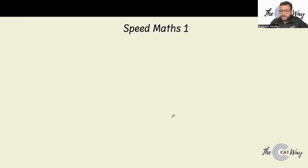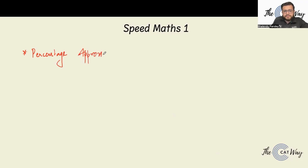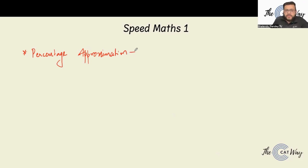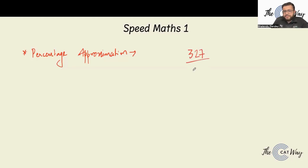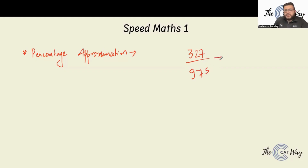Hi guys, welcome to the first class of speed math. In this class, the major topic will be percentage approximation. Many times in your QA as well as your LRDI, you arrive at certain equations where you have to calculate what percentage one number is of another. For example, let's take 327 divided by 975 — we need to identify what percentage value we are looking at.